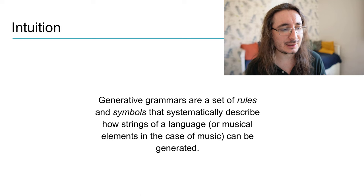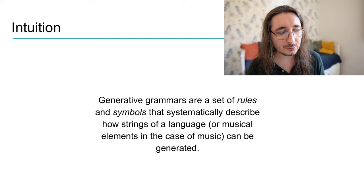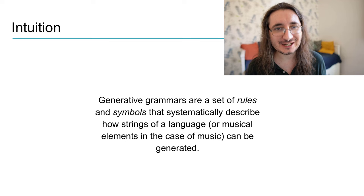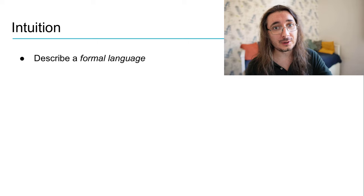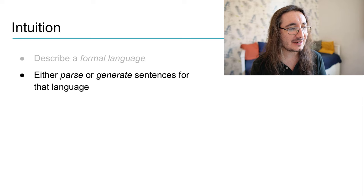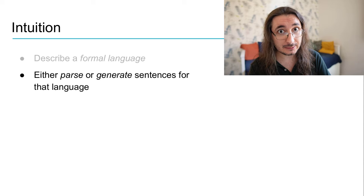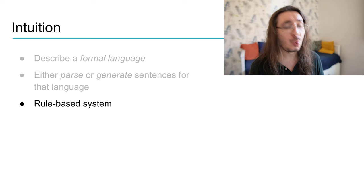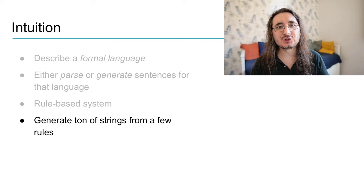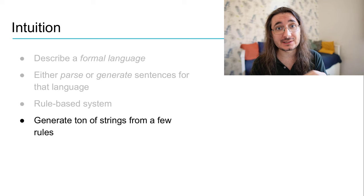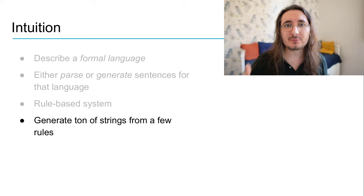What is the intuition behind a generative grammar? Generative grammars are a set of rules and symbols that systematically describe how strings of a language — or musical elements in the case of music — can be generated. They describe a formal language and can be used to either parse or generate sentences for that language. Because they leverage symbols and rules, generative grammars are rule-based systems with the capacity of generating a ton of strings out of a small set of rules. That's why we call them generative.